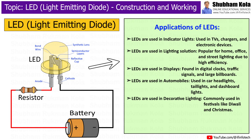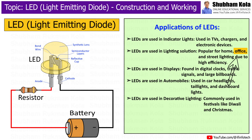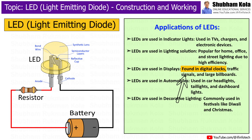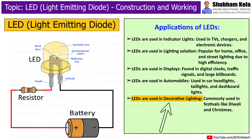Next, we will see the applications of LEDs. First is indicator lights — LEDs are used in indicator lights in TVs, chargers, and electronic devices. Next is lighting — LEDs are popular for lighting homes, offices, and streets due to high efficiency. LEDs are found in displays such as digital clocks, traffic signals, and large billboards. LEDs are used in automobiles for car headlights, daytime running lights, and dashboard lights. LEDs are also used in decorative lighting.